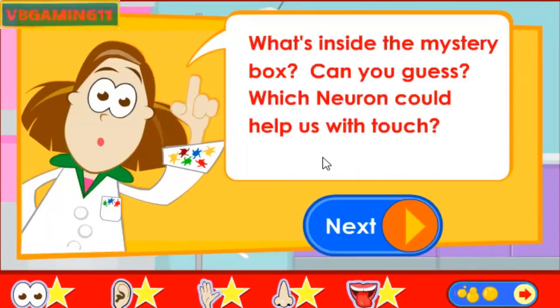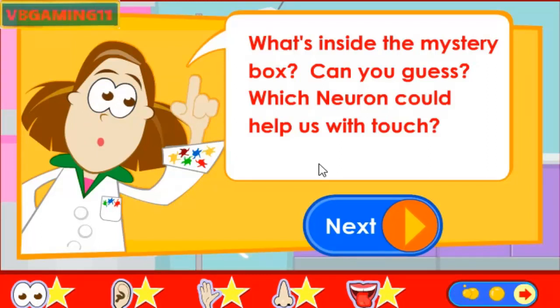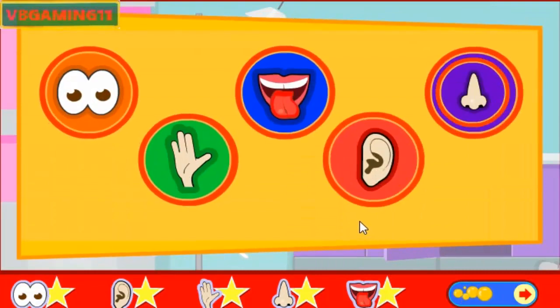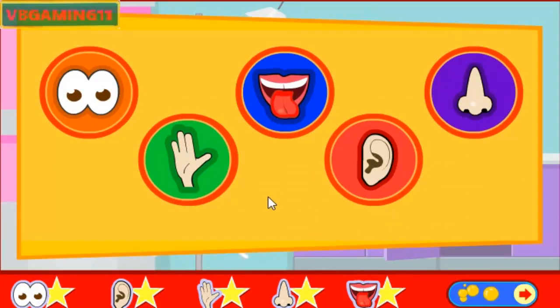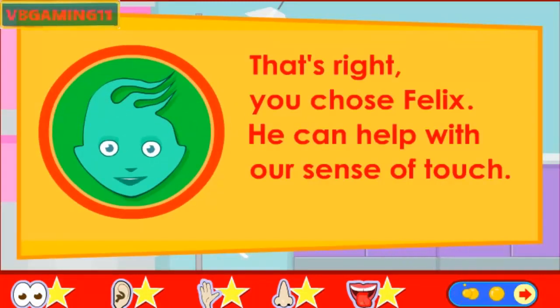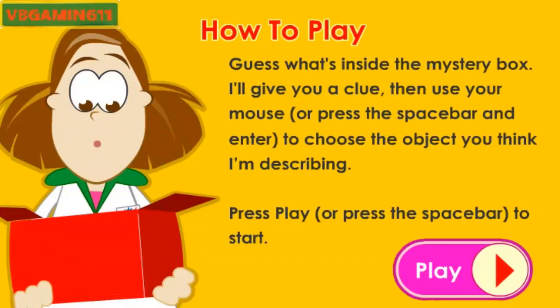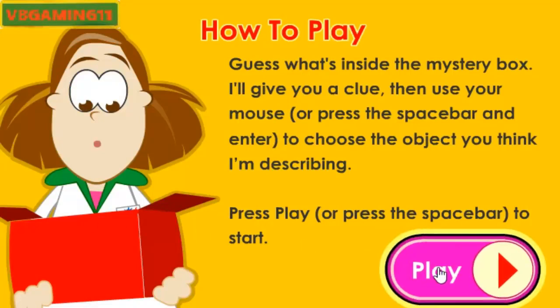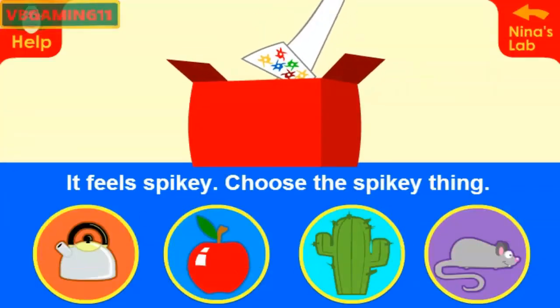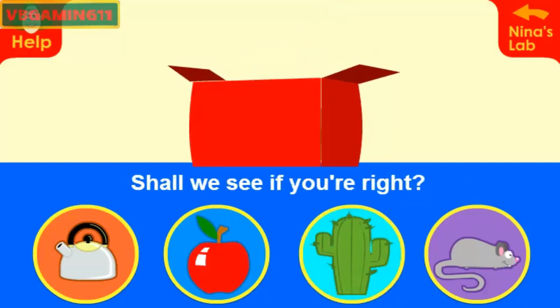What's inside the mystery box? Can you guess which neuron could help us with touch? Use the mouse or press the space bar and enter to choose a neuron. That's right, you chose Felix. He can help with our sense of touch. Guess what's inside the mystery box — I'll give you a clue, then use your mouse or press the space bar and enter to choose the object you think I'm describing. It feels spiky — choose the spiky thing. Shall we see if you're right?